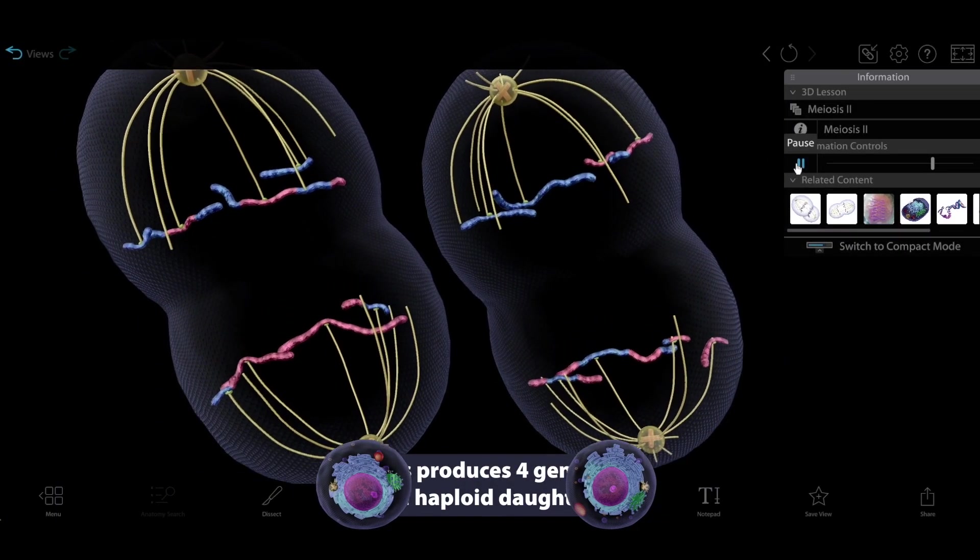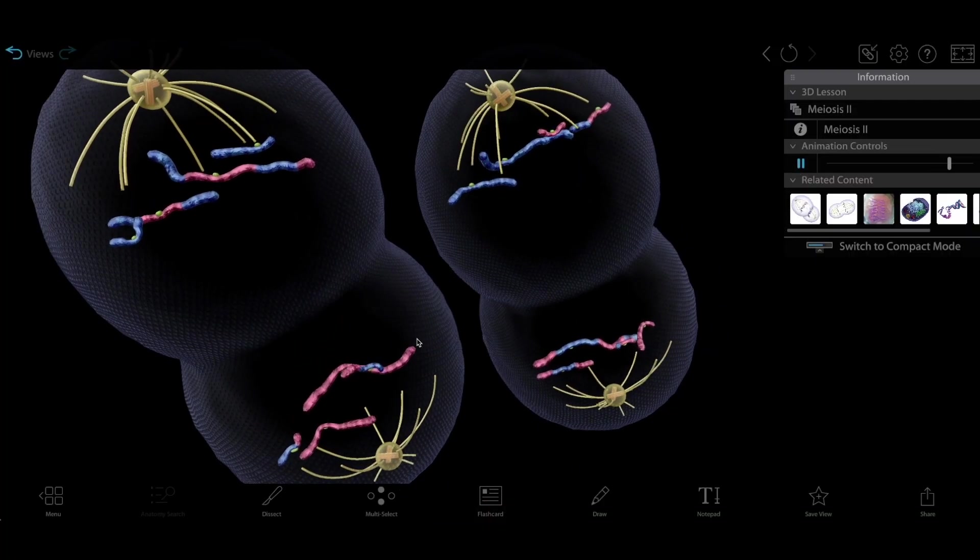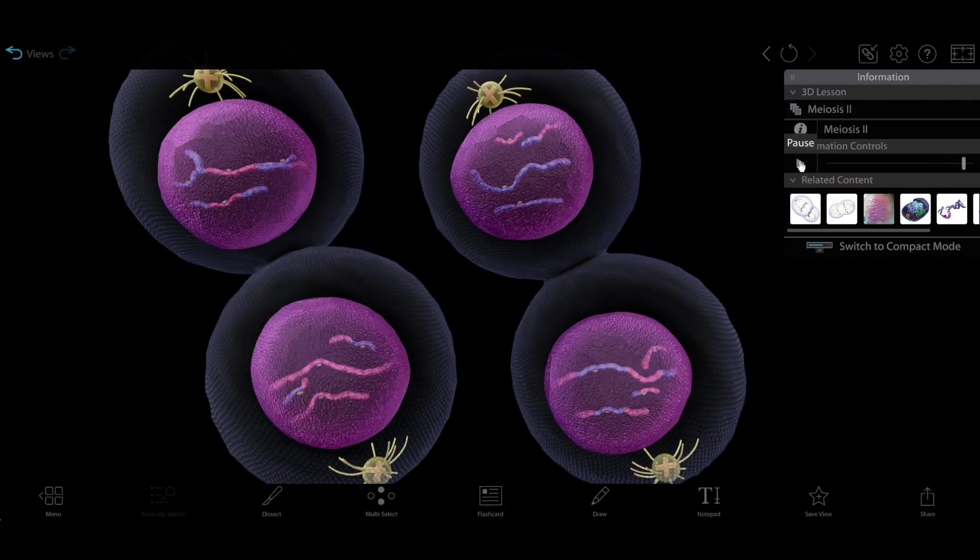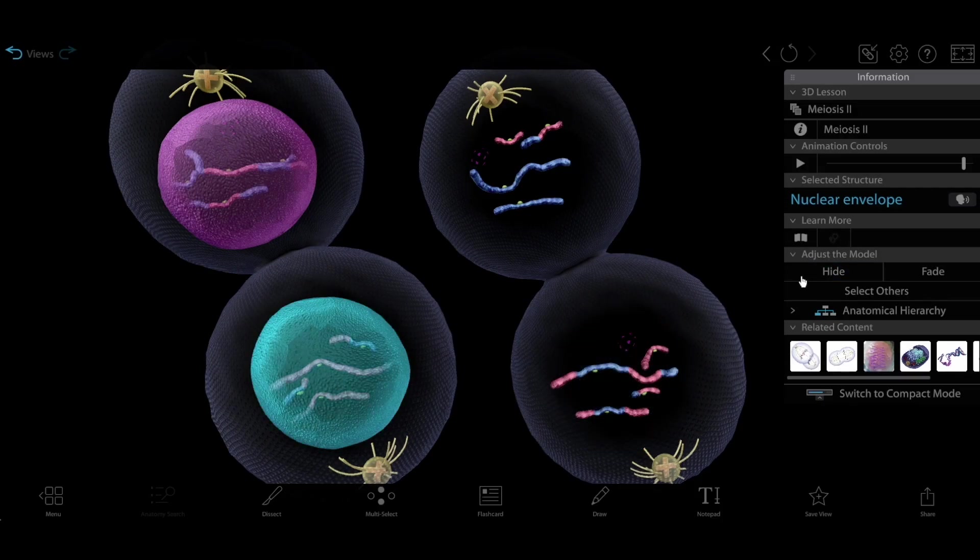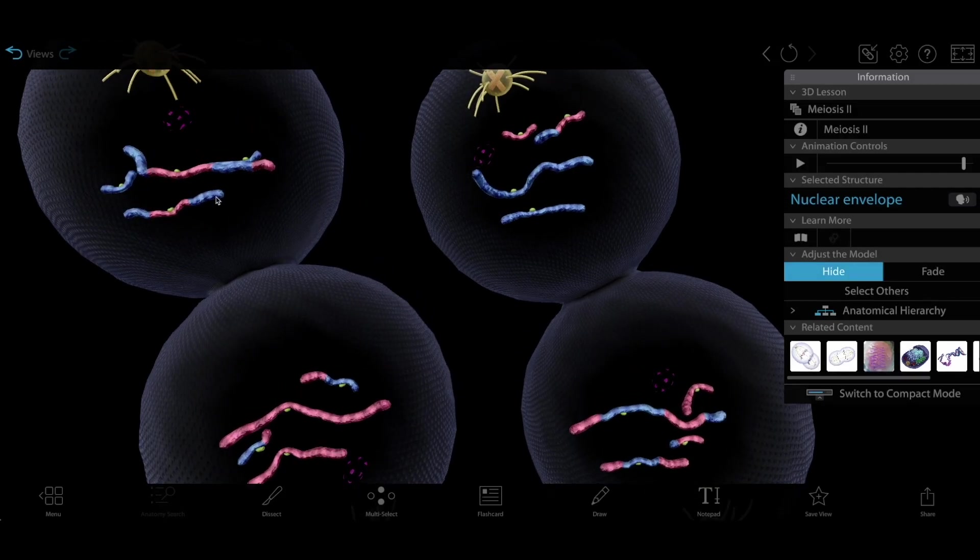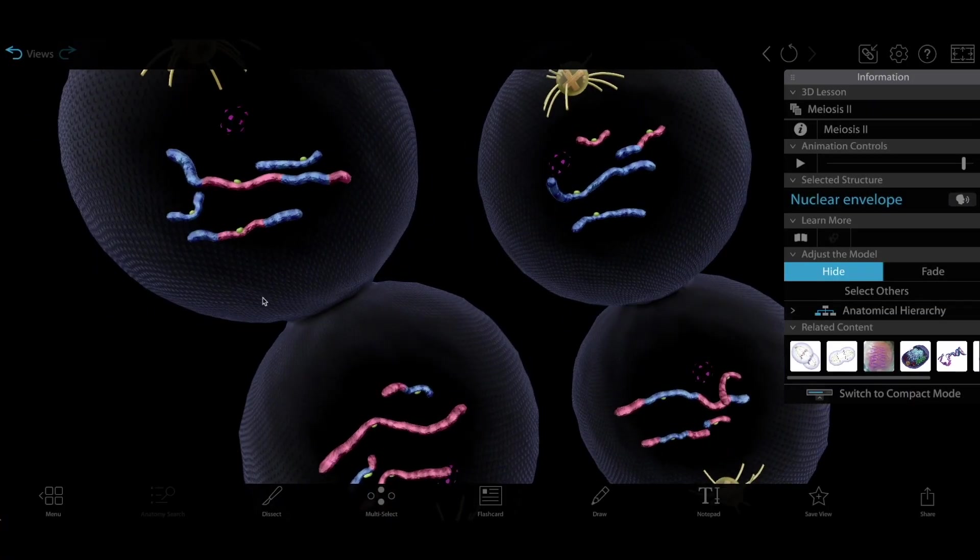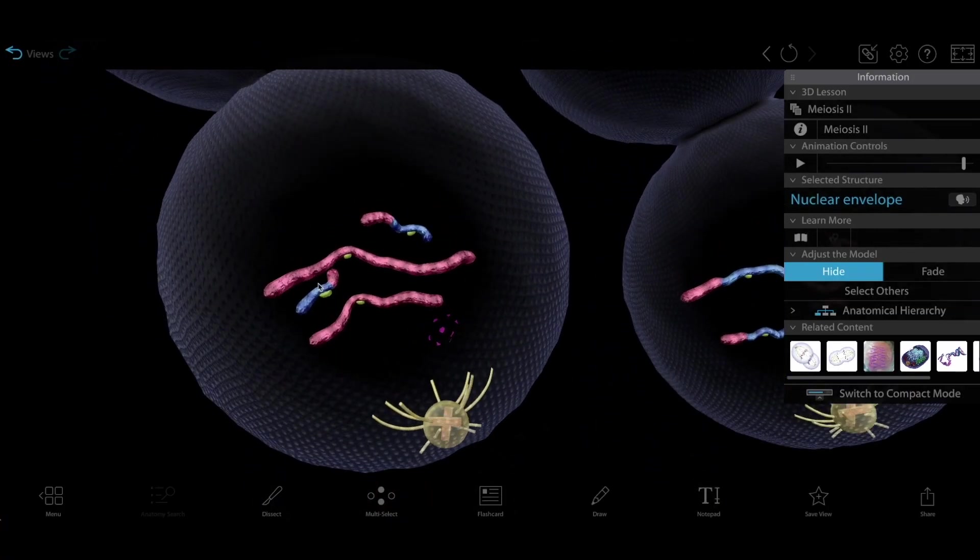This leaves each daughter cell with only one set of chromosomes. In this model, four chromosomes total. These daughter cells are therefore called haploid cells. And you'll notice that the chromosomes in each one look different.